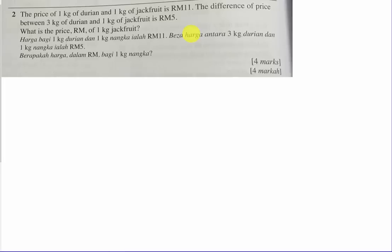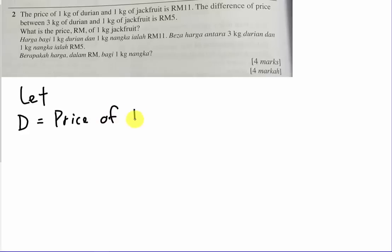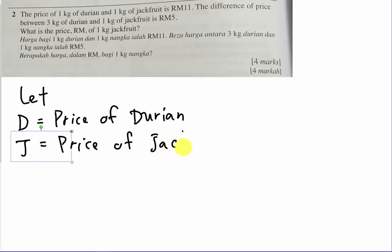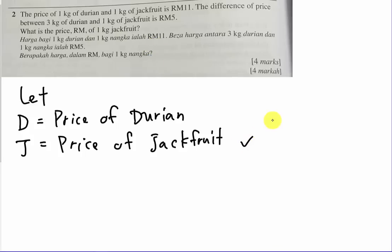For this kind of question, the first thing I do is let variables represent the unknowns. I will use D to represent the price of durian, and J to represent the price of jackfruit. From the first sentence I can form the first equation, and from the second sentence I form the second equation. The objective is to find the price of 1 kg of jackfruit, so I need to find the value of J at the end.